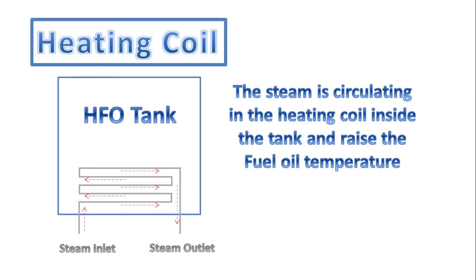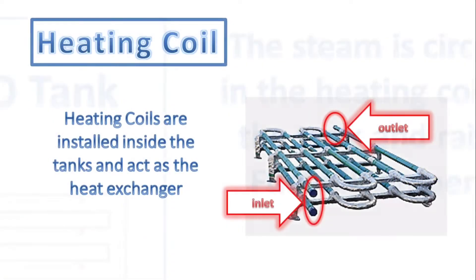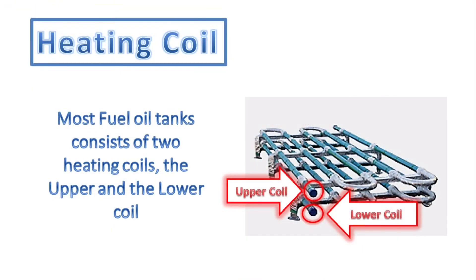Inside the HFO, or heavy fuel oil tank, a heating coil is installed and submerged in the fuel inside the tank. The steam circulates inside the series of heating coils and transfers the latent heat into the fuel. The heating coils inside the tank are normally divided into two parts: the upper heating coil and the lower heating coil.